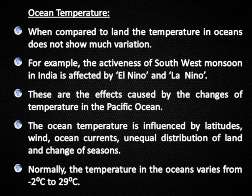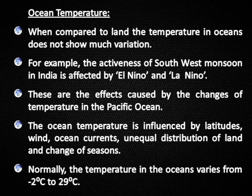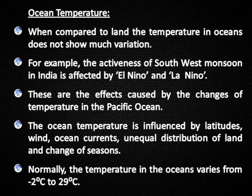Ocean Temperature: Compared to land, the temperature in oceans does not show much variation. For example, the activity of the southwest monsoon in India is affected by El Niño and La Niña — effects caused by temperature changes in the Pacific Ocean. Ocean temperature is influenced by latitude, wind, ocean currents, unequal distribution of land, and change of seasons. Normally, ocean temperature varies from minus 2°C to 29°C.